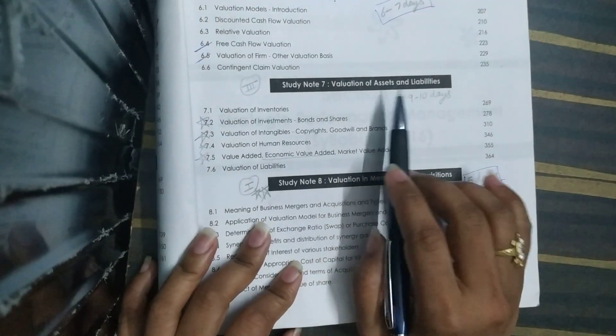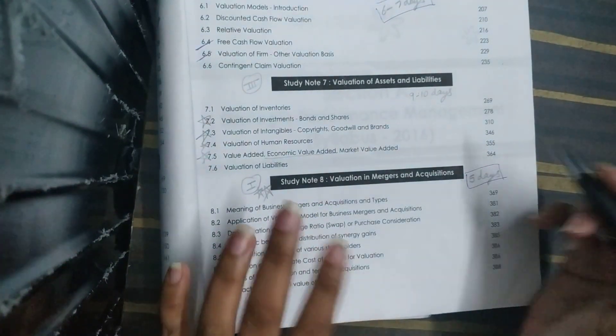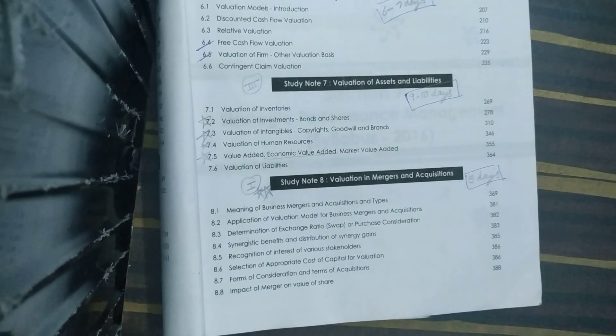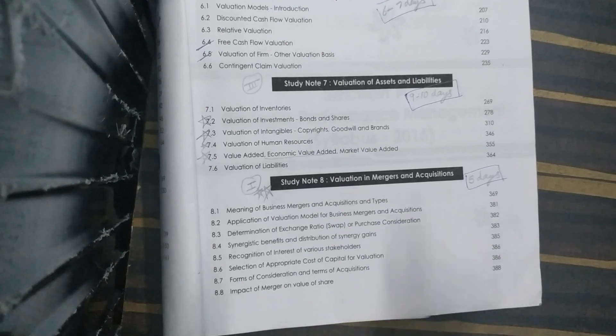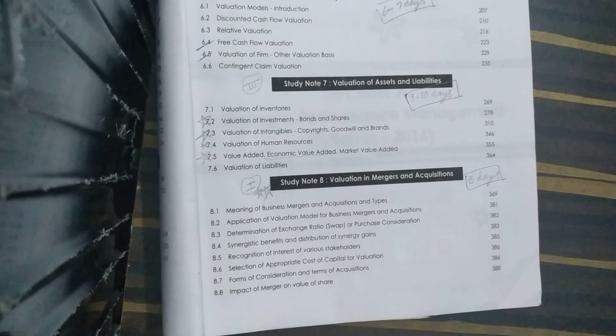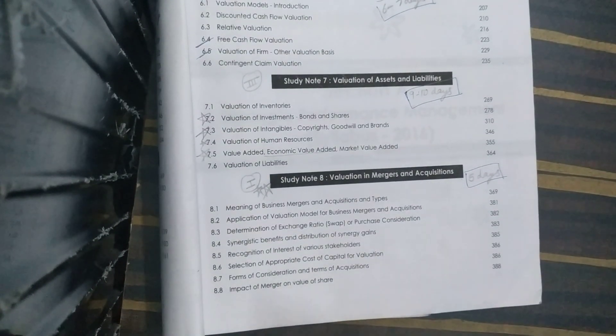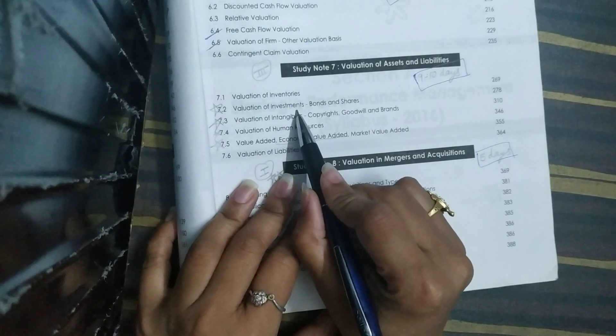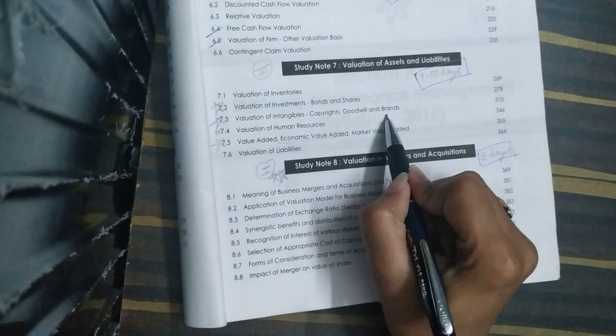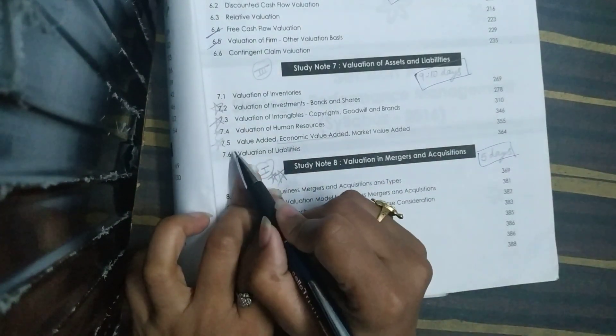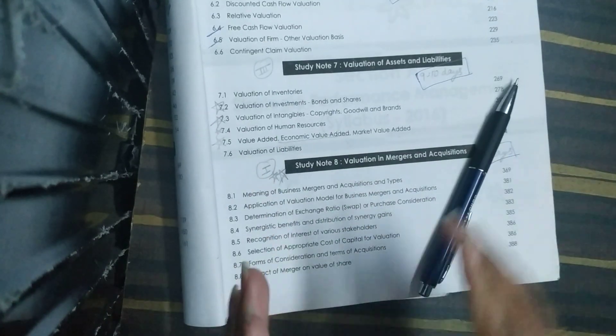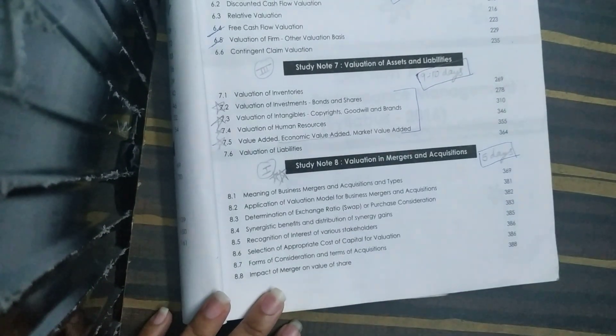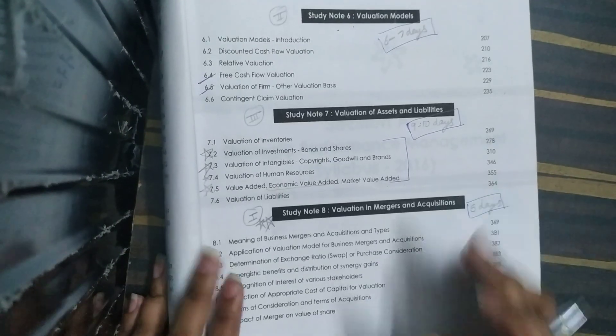Third, if we look at Valuation of Assets and Liabilities, this is a little lengthy chapter but also has weightage. You can cover it in 9 to 10 days easily as an average student. Above average students can cover it in 1 week. Here I am talking about students who keep average time. Important topics include valuation of investments, bonds and shares, copyrights, goodwill and brands, human resource valuation, value added, economic value added, and market value added. Please cover these 4 topics because questions come a lot in exams.